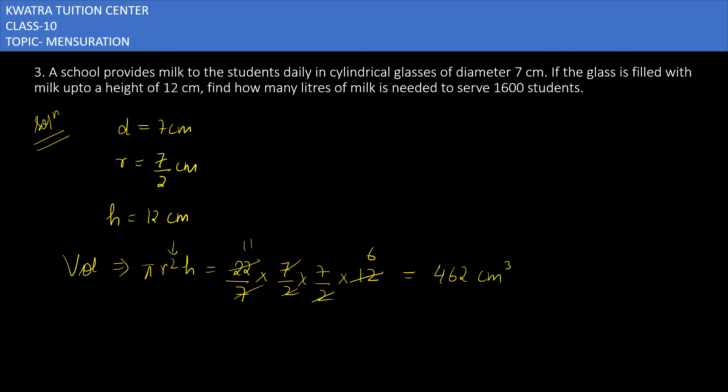The number of students is 1600, so just multiply it with 1600. 462 into 1600 will give you 739,200 centimeter cube. If you want to find it in liters, divide it with thousand, so it will be 739.200 liters.